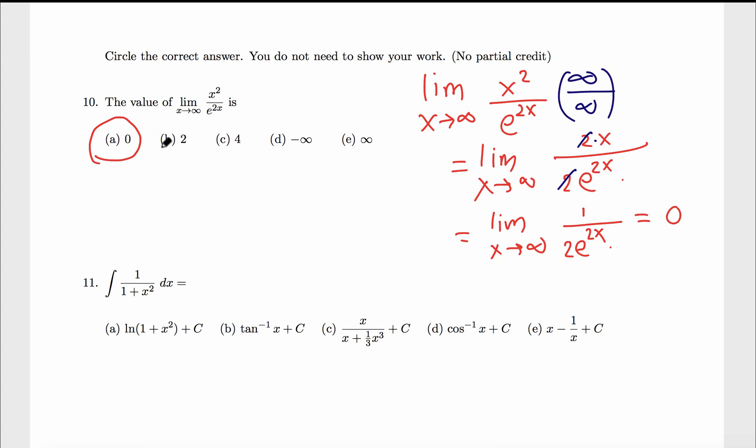There is a shortcut rule for this. If you don't have to show your work, look at this. When x is very big, x squared versus e raised to 2x, exponential function grows faster than this polynomial x squared. When this grows faster, this becomes infinity, so a number over infinity is 0. Bottom grows faster means it becomes 0.